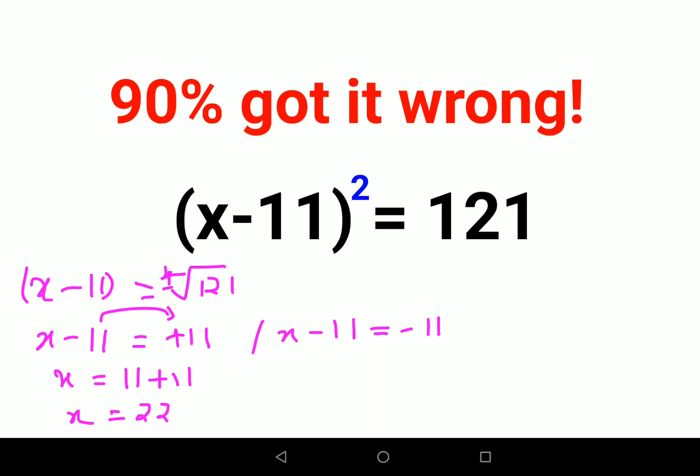And here I can shift the 11 and it becomes minus 11 plus 11, so the answer comes out to be 0. Therefore, I can say the value of x is 22 or x is 0.